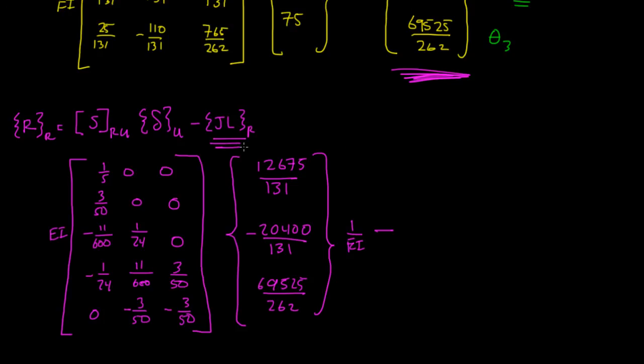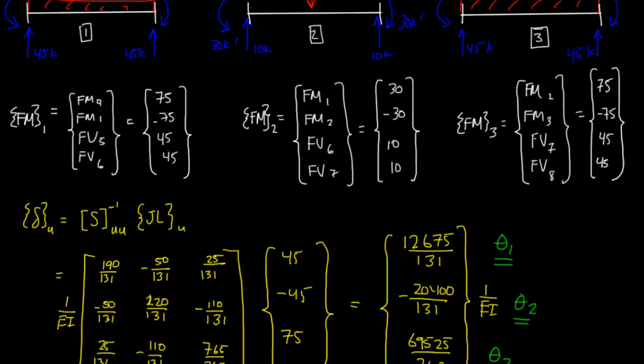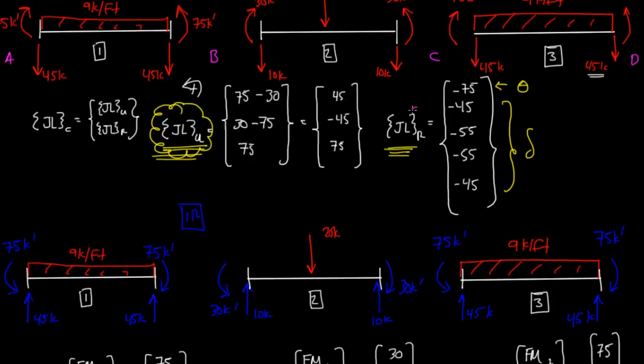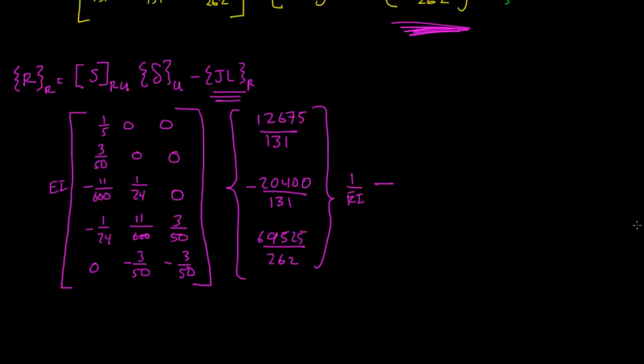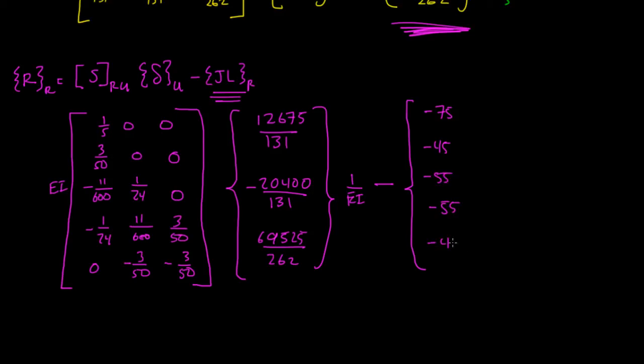And then from that, we subtract our JL restrained column vector. And our JL restrained column vector was right here. The 75, negative 75, 45, 55, all that we bring down here. And those values were negative 75, negative 45, negative 55, negative 55, and negative 45.